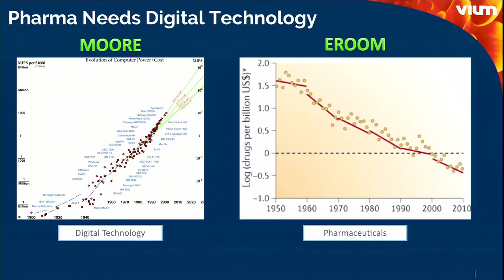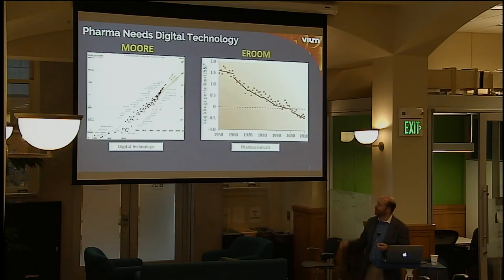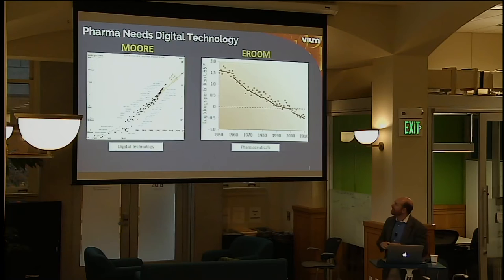First, a little bit of background on the pharmaceutical industry — this is where I decided I wanted to start my next company. On the left here, most of you are probably familiar with this chart: an illustration of Moore's Law. On a beautiful log scale you can see computing power — MIPS per $1,000 — going up and to the right. This is one of the most remarkable technological phenomena, growing at this rate over so many orders of magnitude, and we can see how it's transformed our society.